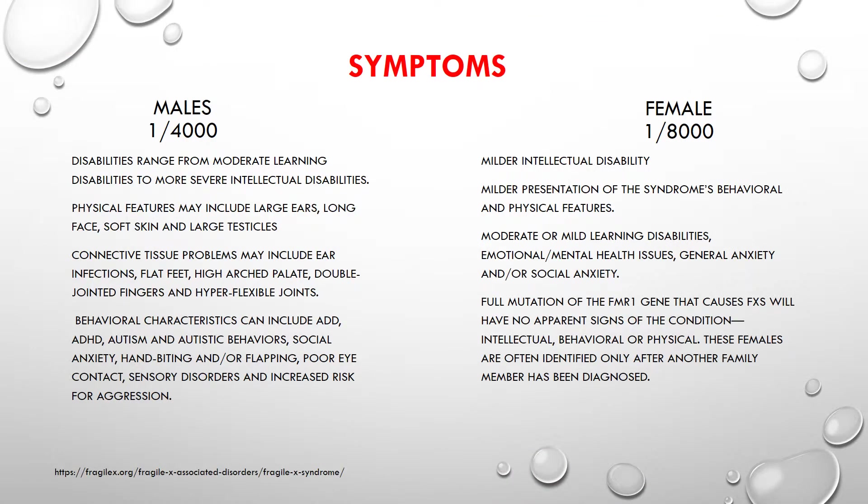No one individual will have all the features of Fragile X Syndrome. Symptoms are similar between males and females, but will differ in their severity. Males are more severely impacted, occurring in one in every 4,000, and they often have significant intellectual disability, moderate to severe learning disabilities, and physical features that include large ears, long face, soft skin, and large testicles.